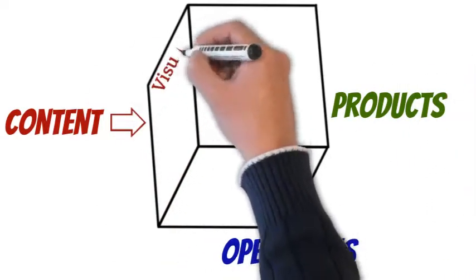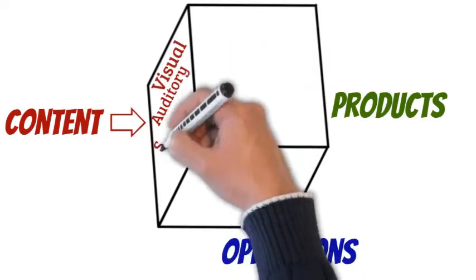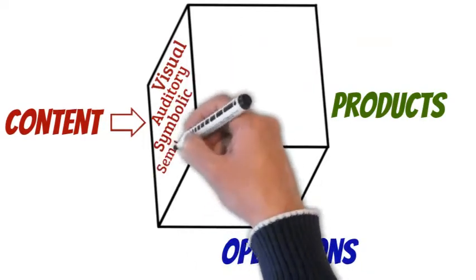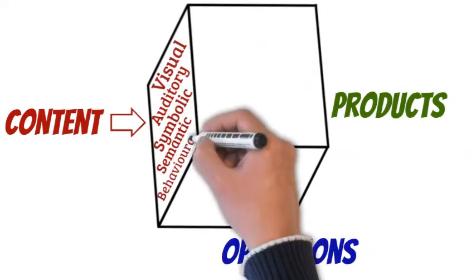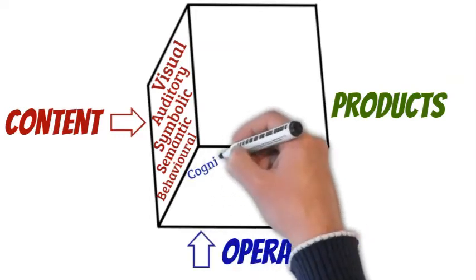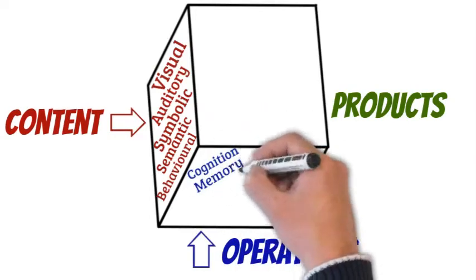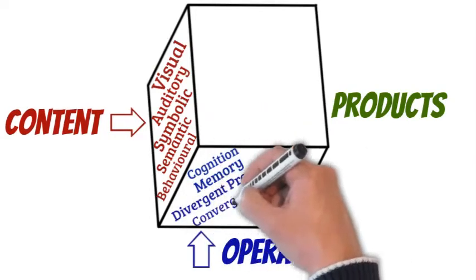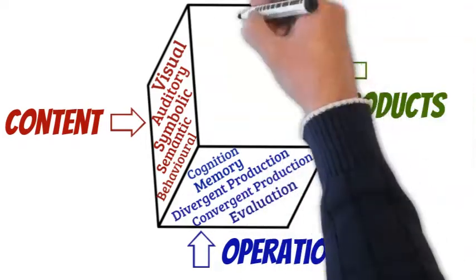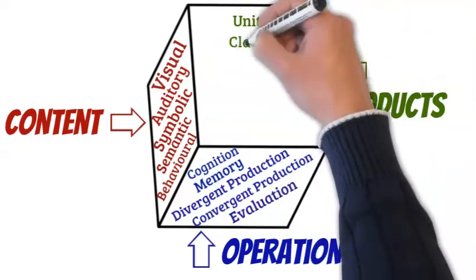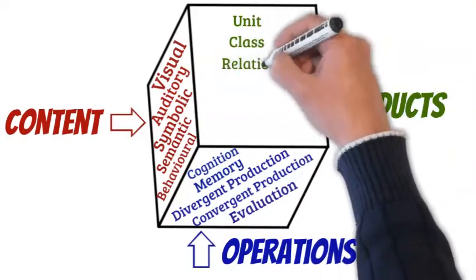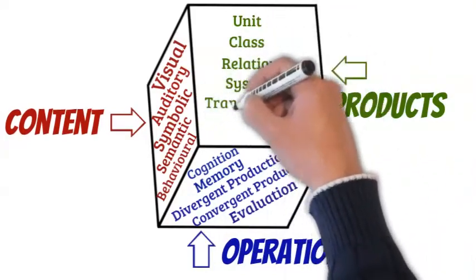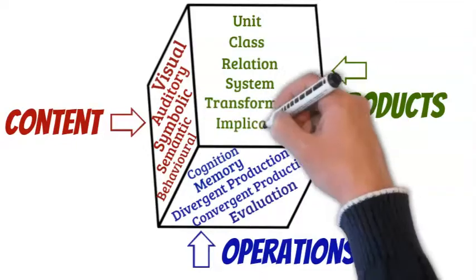There are five kinds of contents: visual, auditory, symbolic, semantic and behavioral. Five kinds of operations as cognition, memory, divergent production, convergent production and evaluation. And five kinds of products as units, classes, relations, systems, transformations, and implications.